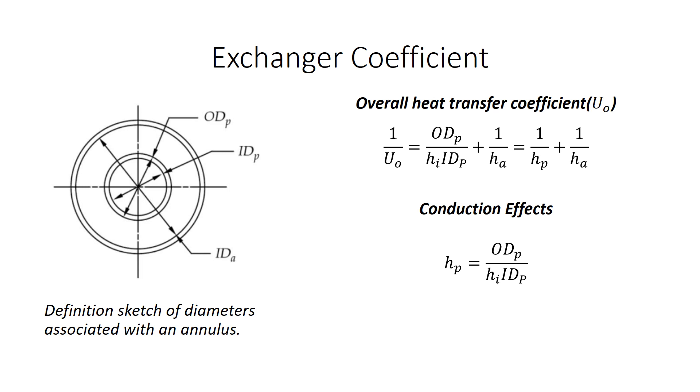For the purposes of discussion, we assume that heat is transferred from the fluid within the tube to the fluid within the annulus. It is standard practice to base the resistance on the outside surface area by multiplying it by the sum of the resistance, resulting in the overall heat transfer coefficient, where HI is the convection coefficient between the fluid in the tube and the tube wall, and HA applies between the fluid in the annulus and the tube, where HP is the conduction effects.